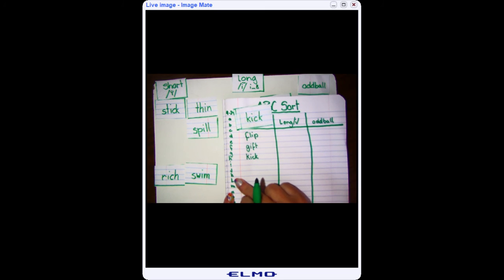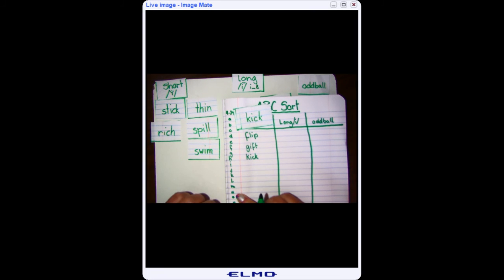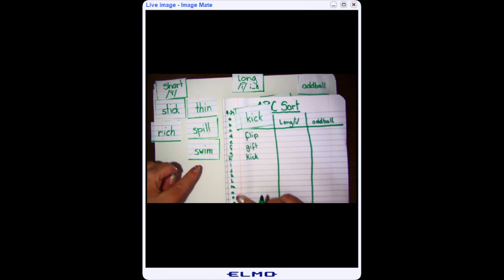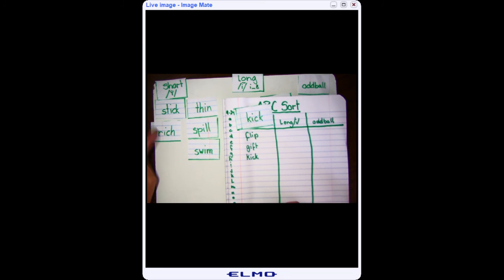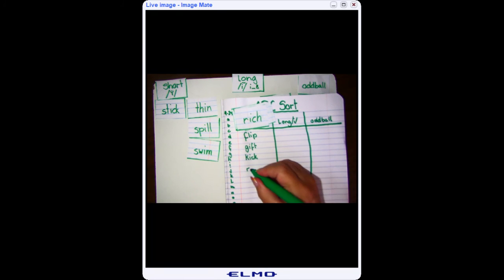Then L. None of them start with L. M, N, O, P, Q. Nope. But I have an R. So I lay that down. I write down my R. Rich.